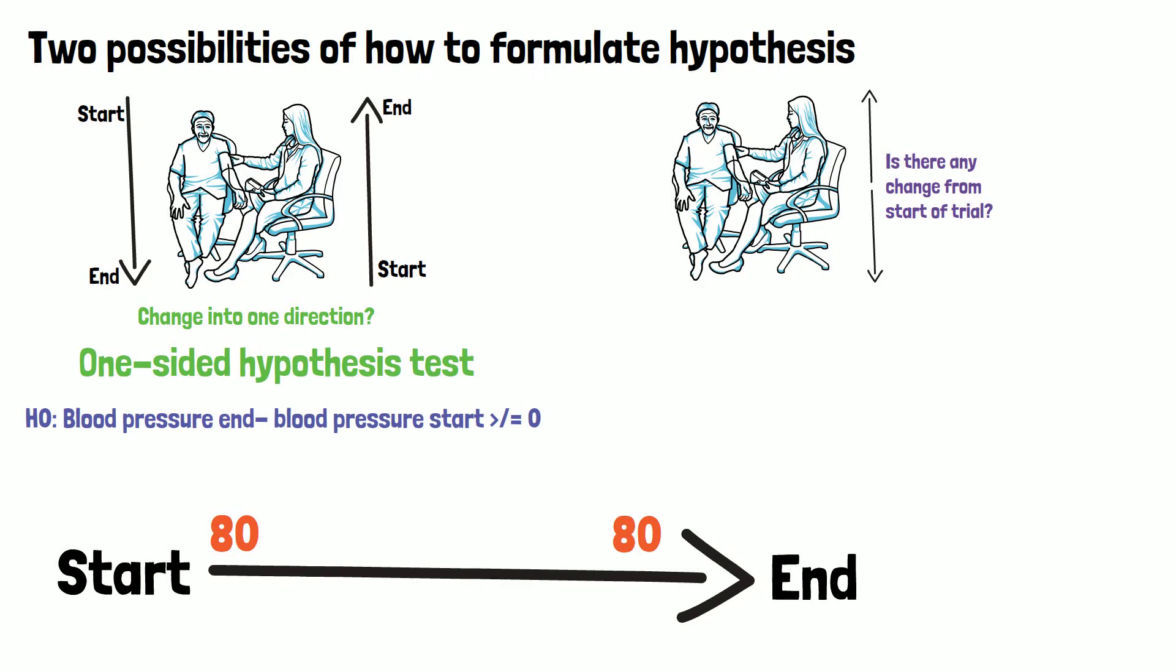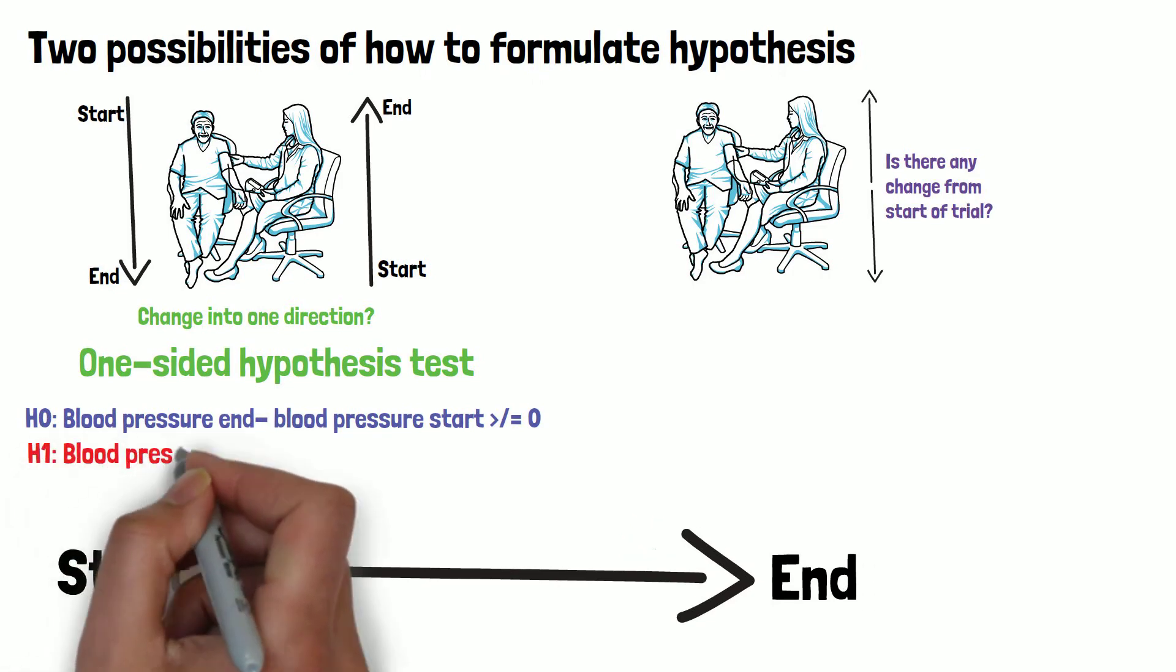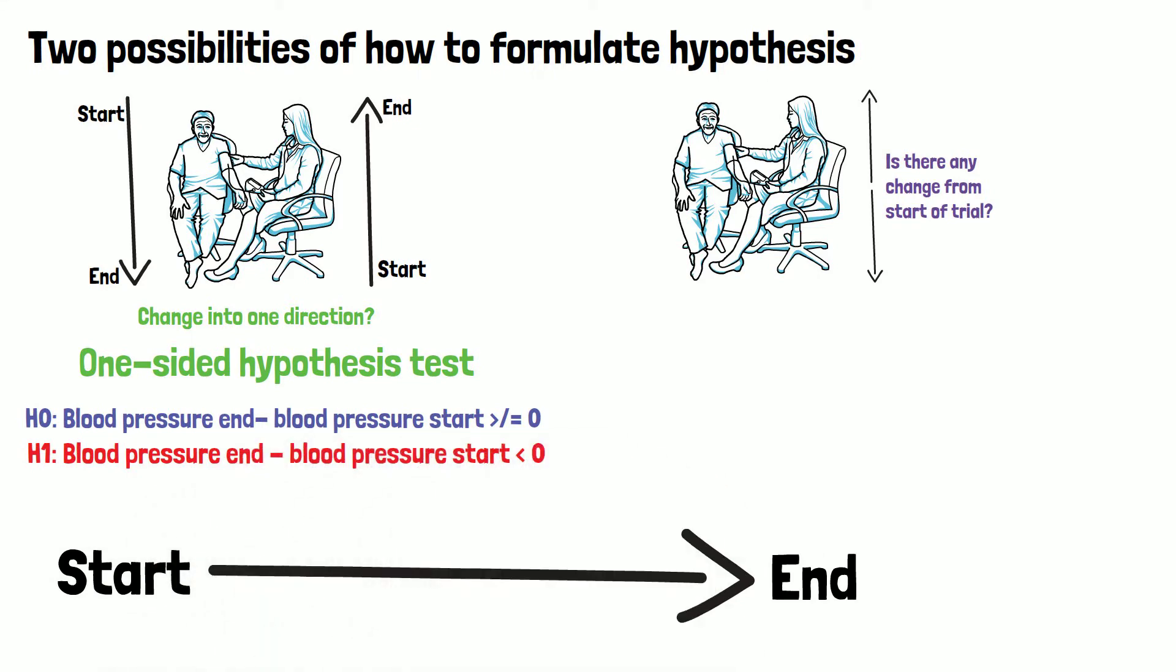We are not interested if it has increased. Nevertheless, we use equal or larger than zero here because in hypothesis testing all outcome possibilities must be covered. The alternative hypothesis which we aim to find evidence for is that the blood pressure decreases over the period of the trial so that the difference between the two time points is smaller than zero.